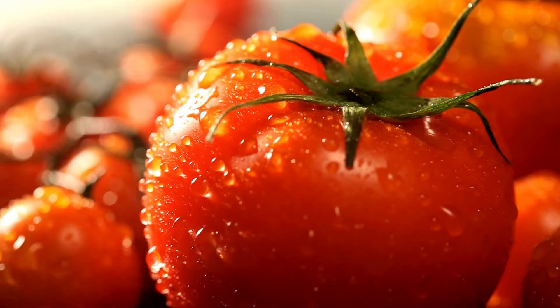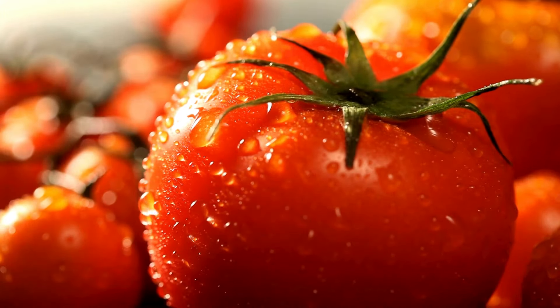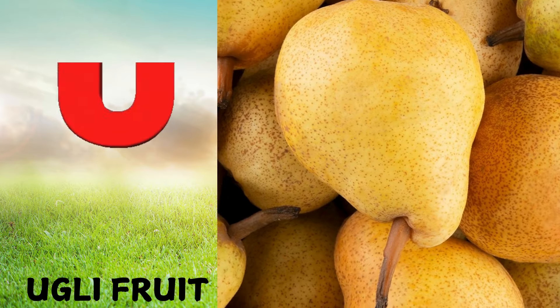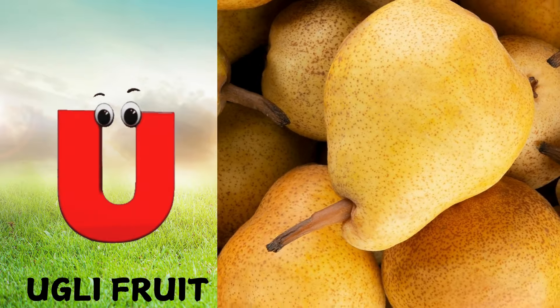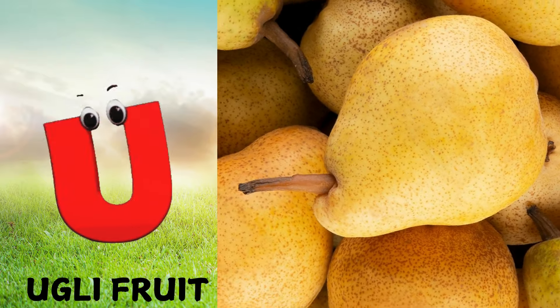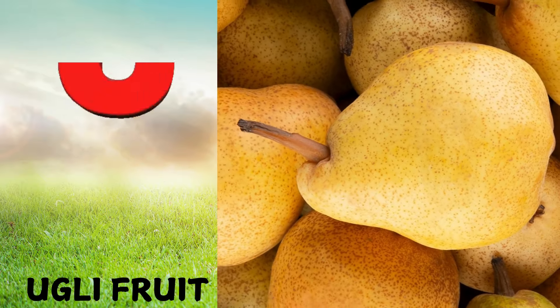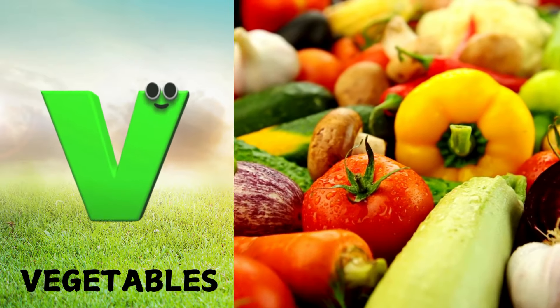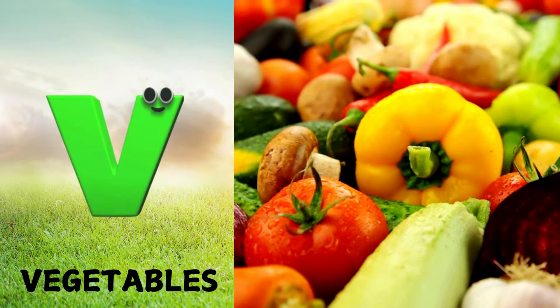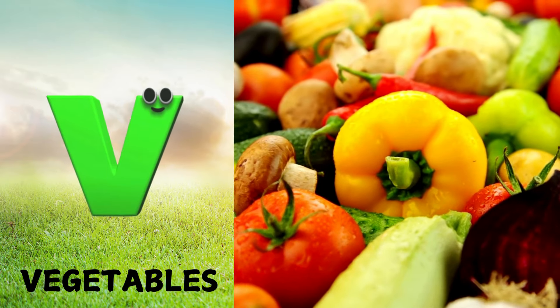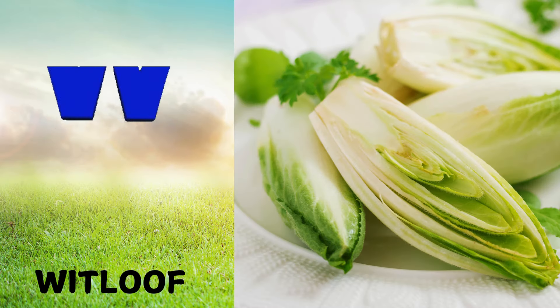U is for ugly fruit, uh, ugly fruit. V is for vegetables, vuh, vegetables. W is for whitloaf, wuh, whitloaf.